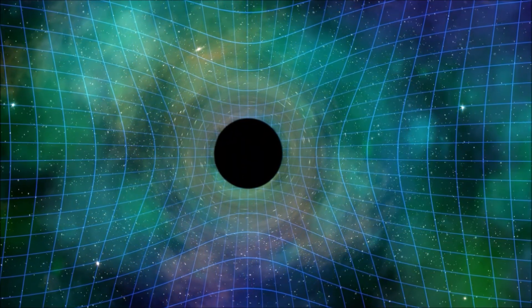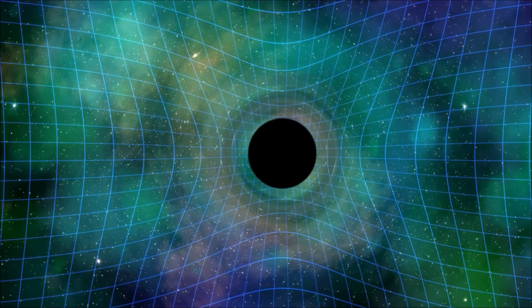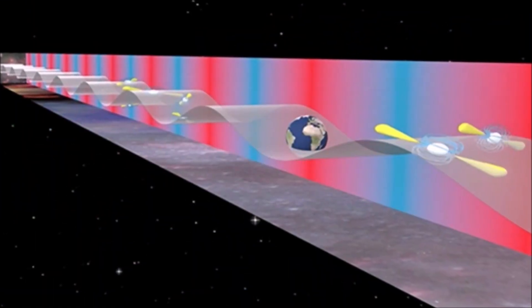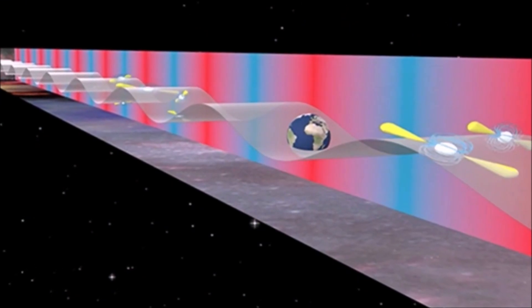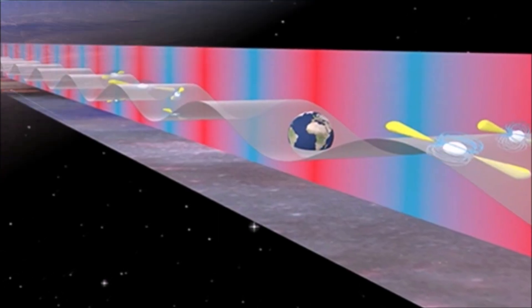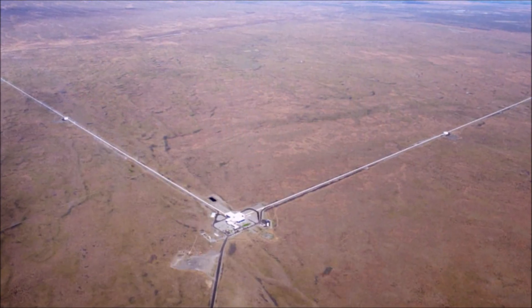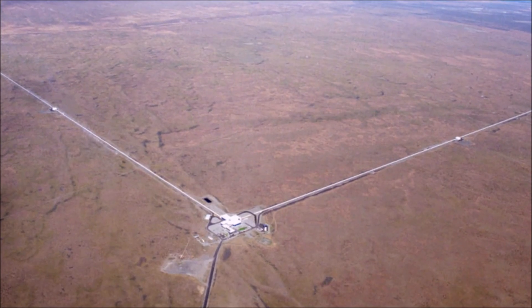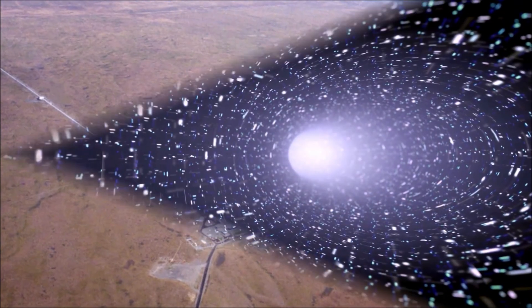As gravitational waves move through a tiny extra dimension, they should generate a tower of extra gravitational waves with high frequencies following a regular distribution. But current observatories cannot detect frequencies that high.